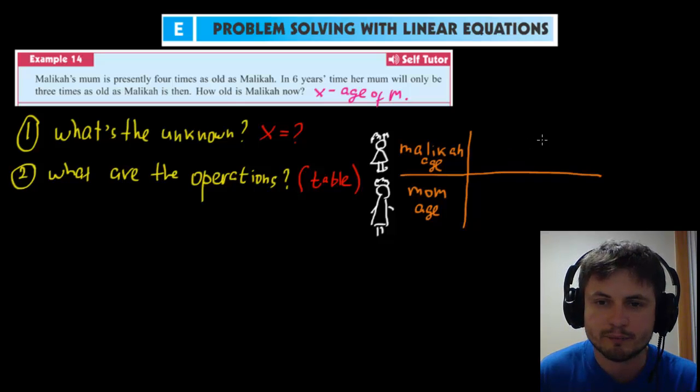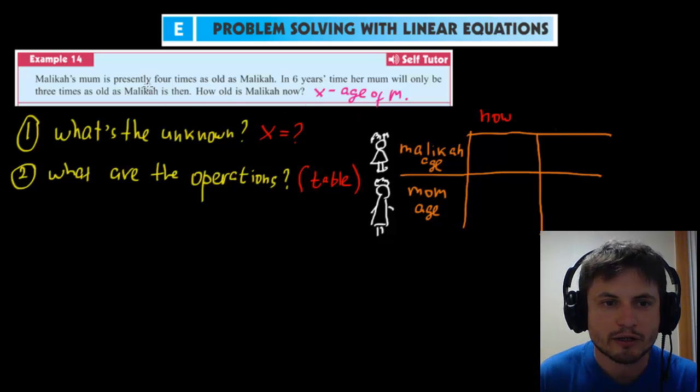Now we also have two different periods. In other words we have another column right here and this column is going to be, so the first column on top is going to be now. So their age now, today. And then the second column is going to be age later, which is actually in six years time. So now and this is six years later.